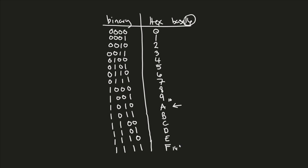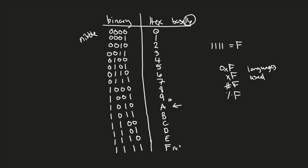Now here's the beauty of it — you can represent what's known as a nibble, or four bits, by a single hexadecimal digit. So 1111 is equivalent to F in hexadecimal. Hexadecimal is typically denoted with a zero and an X prefix, like 0xF, which means this is a hexadecimal representation. Some people use just X in front, or a pound sign, or a percent sign — the style varies by language and convention. Just make sure you put something in front to denote you're using hex.